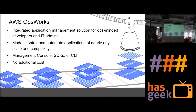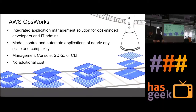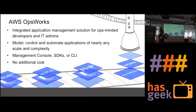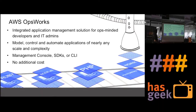Now let's move on to OpsWorks. The two services we spoke about — Beanstalk and CloudFormation — did not explicitly cover how to manage your applications when you have hundreds of servers with a particular version and want to update them all with a new version. In Beanstalk you can create another version of an environment and swap URLs; in CloudFormation you can create another stack and swap URLs. But OpsWorks is the direct way to handle that kind of scenario — it is an integrated application management solution.